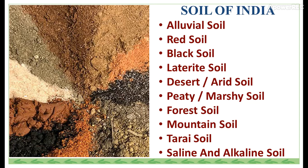The major types of soil found in India are: alluvial soil, red soil, black soil, laterite soil, desert and arid soil, peaty and marshy soil, forest soil, mountain soil, tarai soil, and saline and alkaline soil.